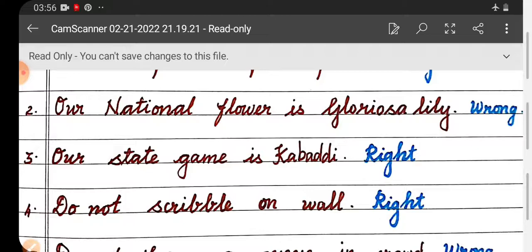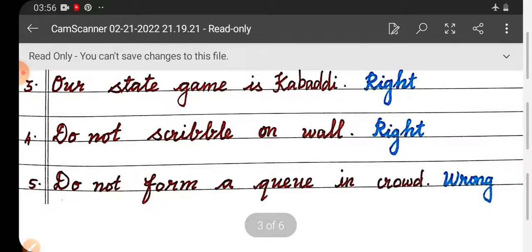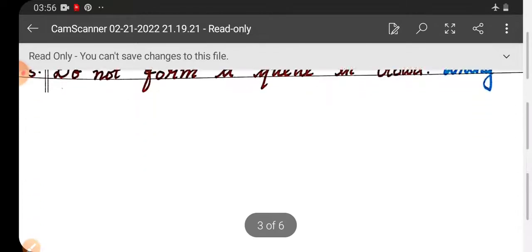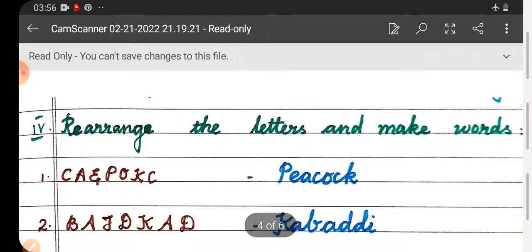Number four: Do not scribble on wall. Right. Number five: Do not form a queue in crowd. Wrong. Roman letter four: Rearrange the letters and make words.